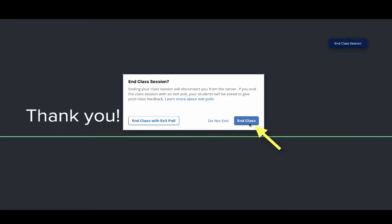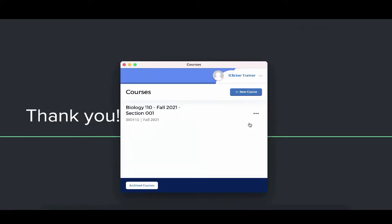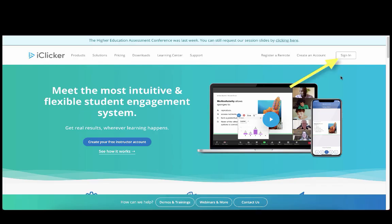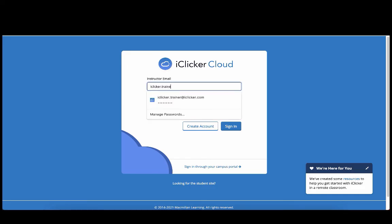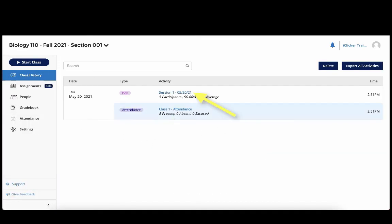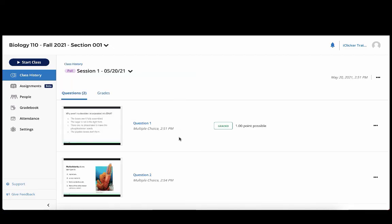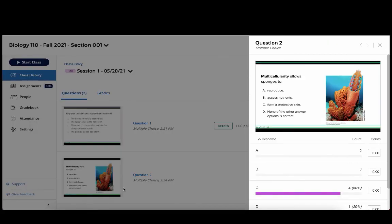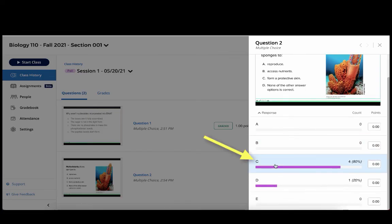After an iClicker class session, you can see the results and students' answers by logging into your course on the iClicker website. Click Sign In, then Instructor. Sign in with the same username and password that you used for the downloaded software, choose the course you'd like to review, and then click into the poll from your class history. You can click on any question to view the class results or grade any that you didn't get to during class by clicking on each correct answer.